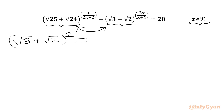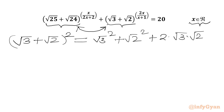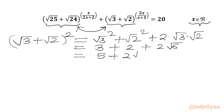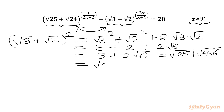So let us apply the (a + b)² formula. I will write root 3 squared plus root 2 squared plus 2 times root 3 times root 2. Root 3 squared is 3, root 2 squared is 2, and 2 times root 3 times root 2 gives root 6. So the value will be equal to 5 plus 2 root 6. We can write 5 as root 25 and 2 root 6 as root 4 times root 6, which equals root 24. So this is equal to square root 25 plus square root 24.